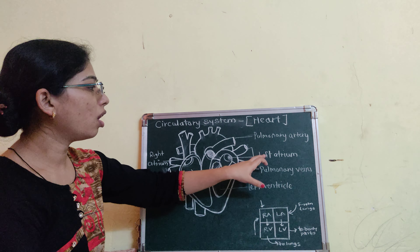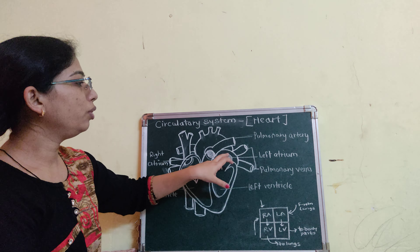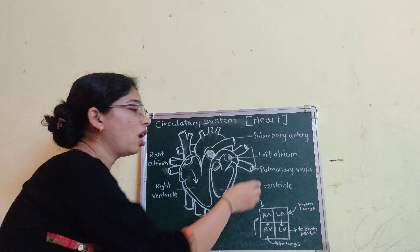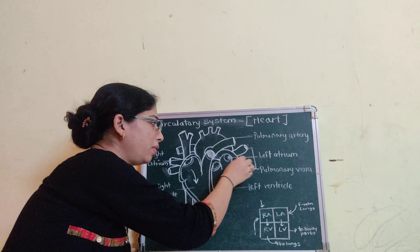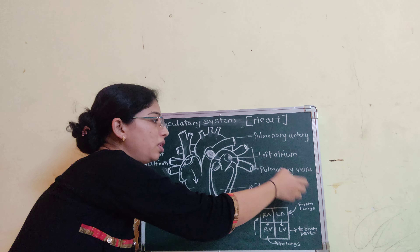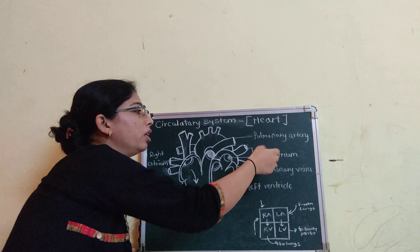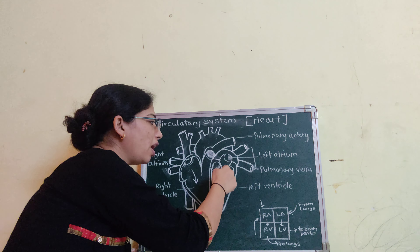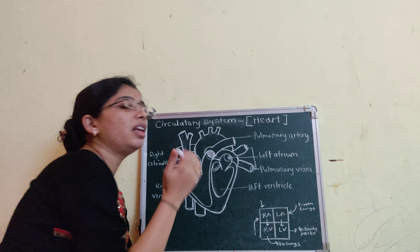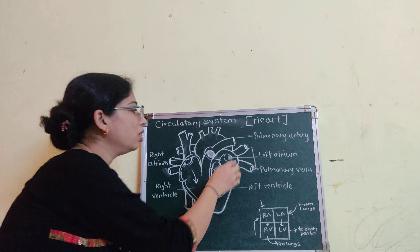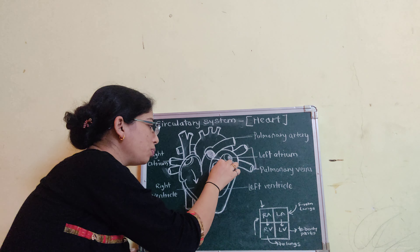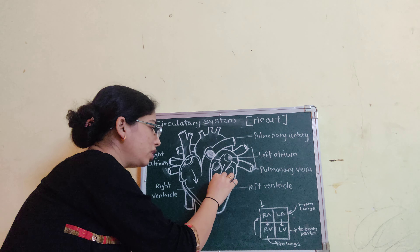When the blood enters the lungs, it gets converted to oxygenated blood — meaning oxygen is mixed into it. Then, the oxygenated blood enters into the left atrium with the help of the pulmonary veins.